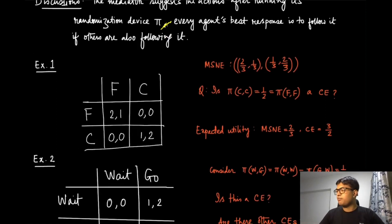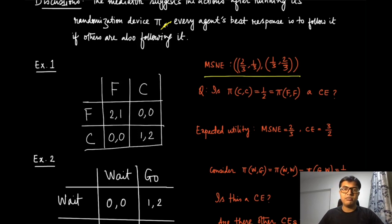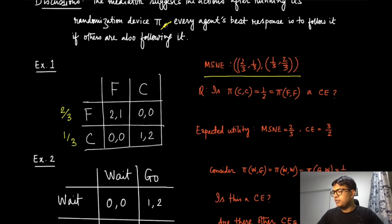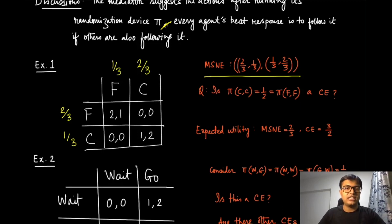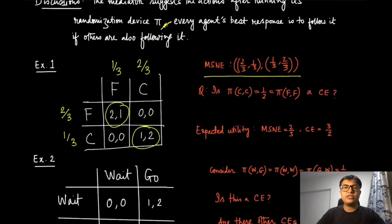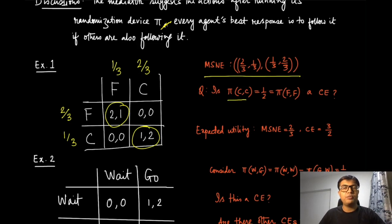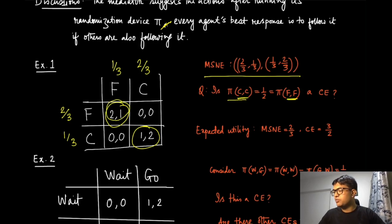Let us come back to our football and cricket game. If you have done the exercise carefully, the mixed strategy Nash equilibrium is: player one picks F with probability two-thirds and C with one-third; player two picks F with one-third and C with two-thirds. That was the non-degenerate mixed strategy Nash equilibrium. Of course, there were also two pure strategy Nash equilibria.